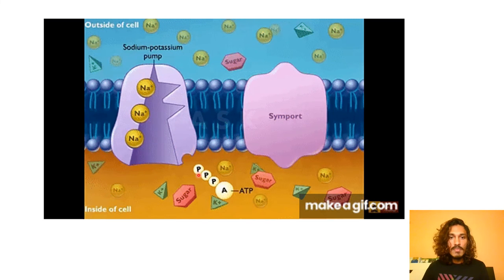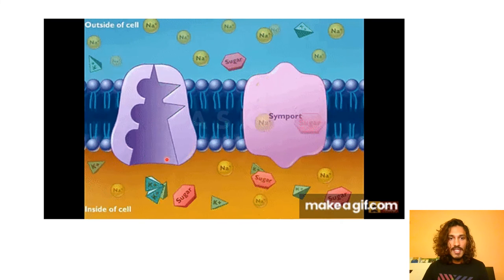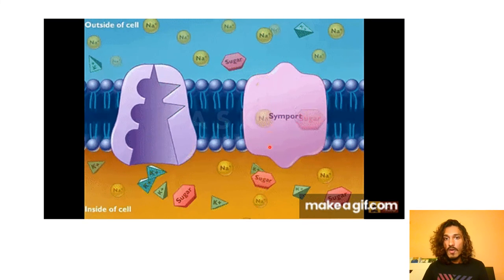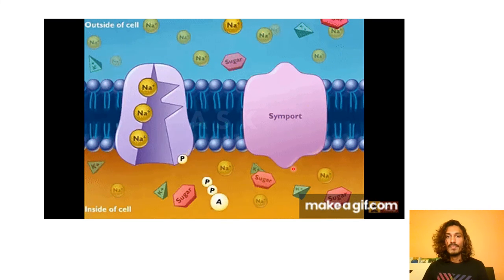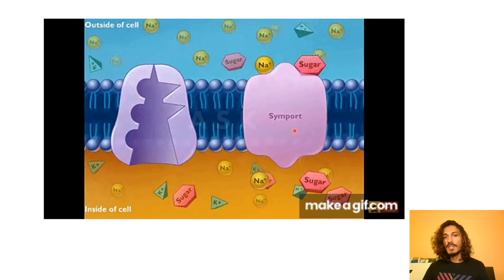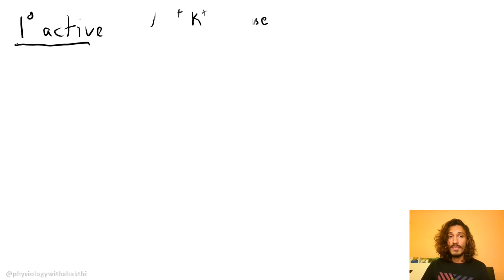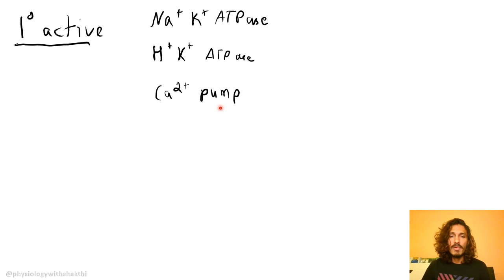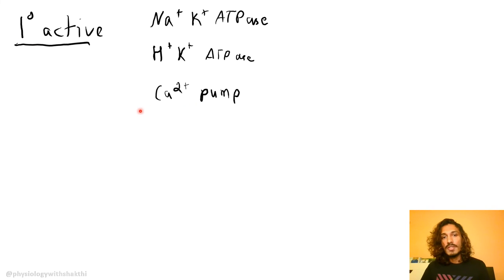For example, the sodium-potassium ATPase pumps sodium out and potassium in, maintaining the sodium concentration gradient. This gradient allows sodium to co-transport along with glucose or other sugars into the cell — this is secondary active transport, specifically co-transport, because both substances move in the same direction.